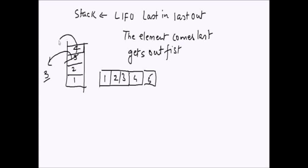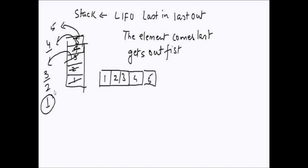If I push 5 and pop, 5 is returned. Pop again and 2 is returned, since 2 was entered after 1. The element entered first — 1 — will be the last to go out. This confirms it is a LIFO data structure.